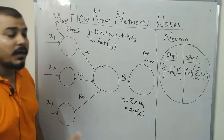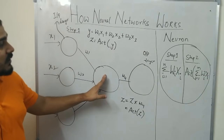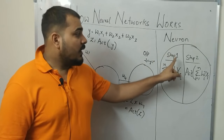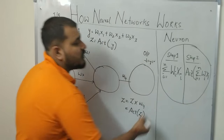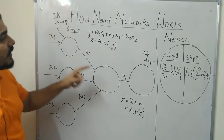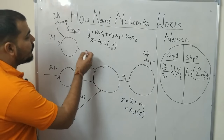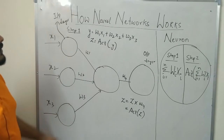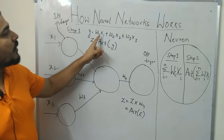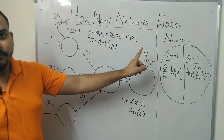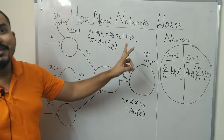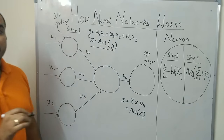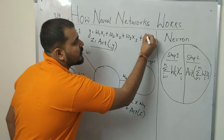When I assign weights w1, w2, and w3, these weights get passed to the hidden neuron. Inside the hidden neuron there are two types of operations that happen. Step 1 is the summation of weights and inputs — we multiply w1 with x1, add w2 multiplied by x2, and add w3 multiplied by x3. So step 1 gives us: y = w1*x1 + w2*x2 + w3*x3. This multiplication and summation happens first.